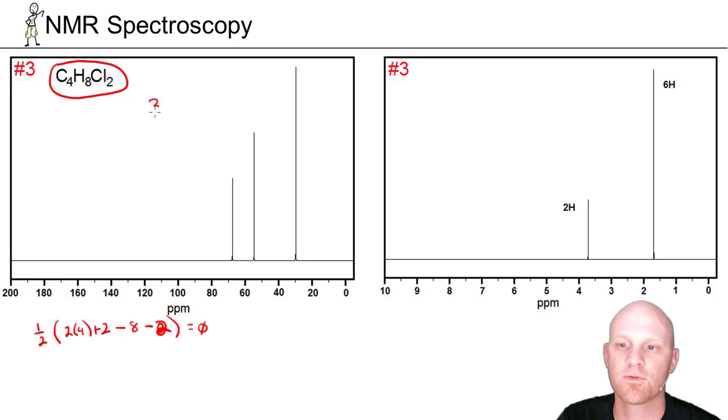We look at the carbon spectrum, and first off, we see 3 signals. We know we have 3 unique carbon environments. So even though we have 4 carbons, there's only 3 signals. So there's either some symmetry or some free rotation going on.